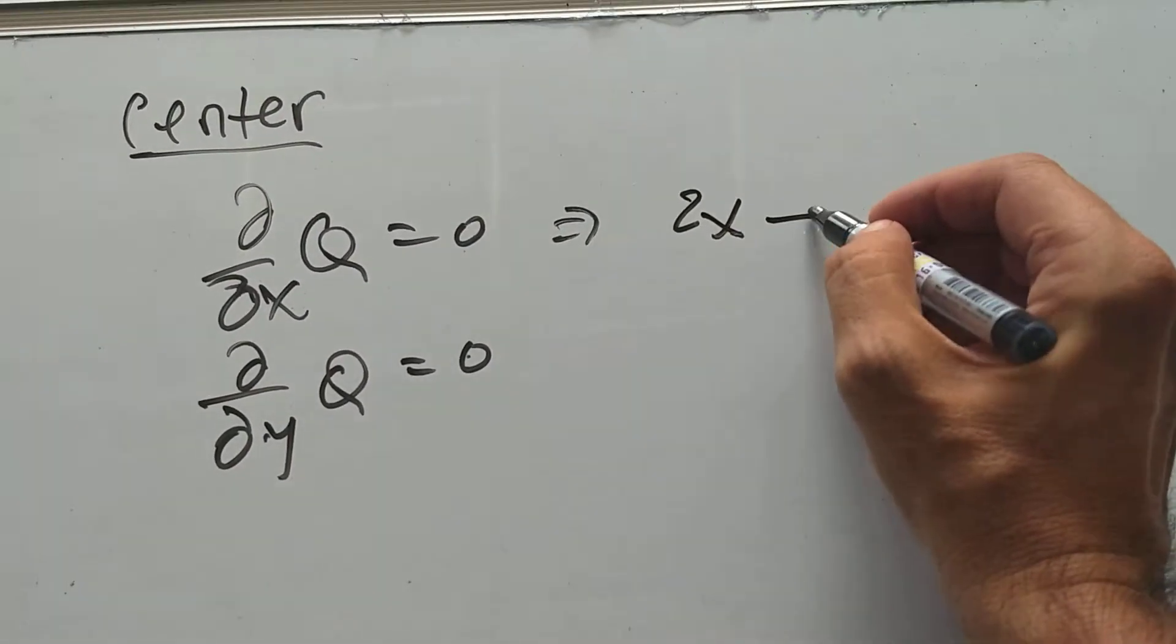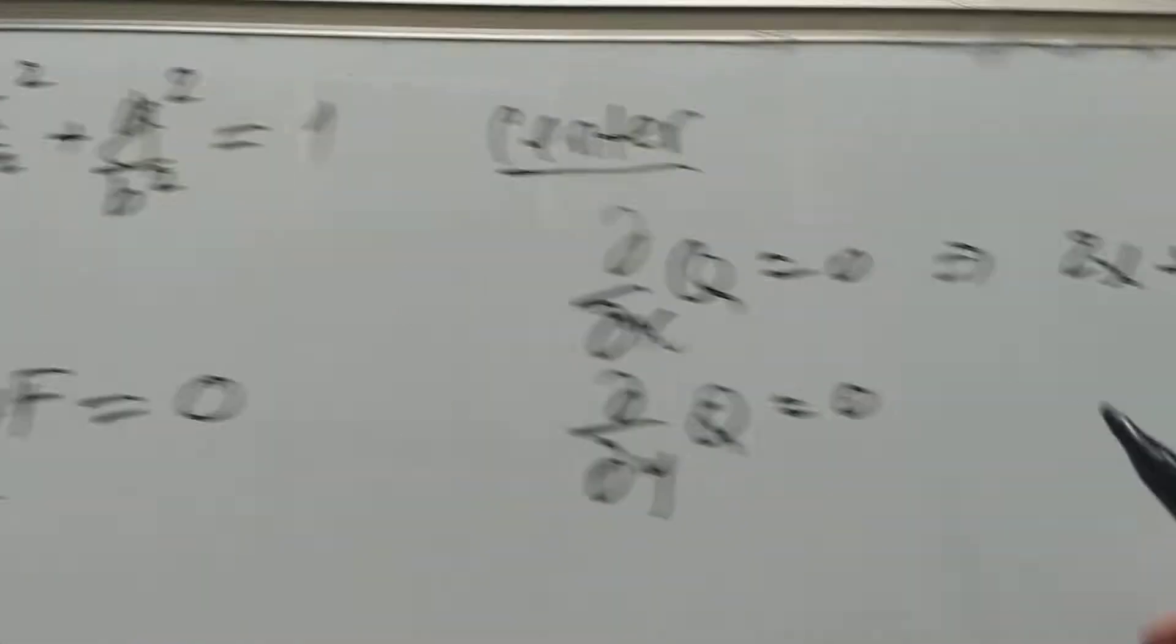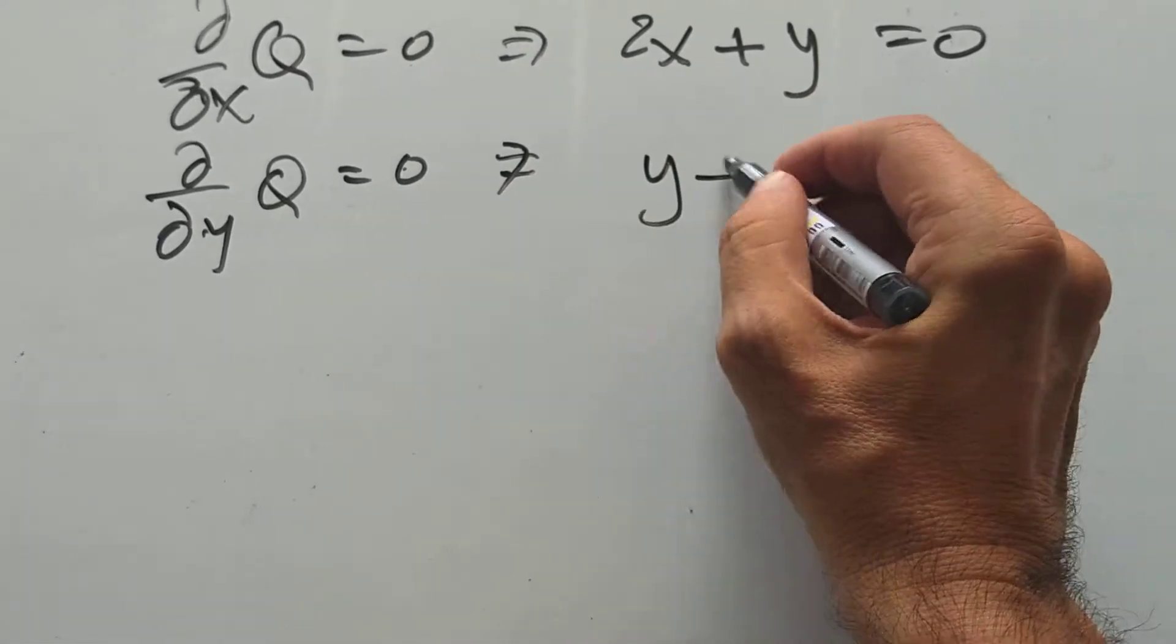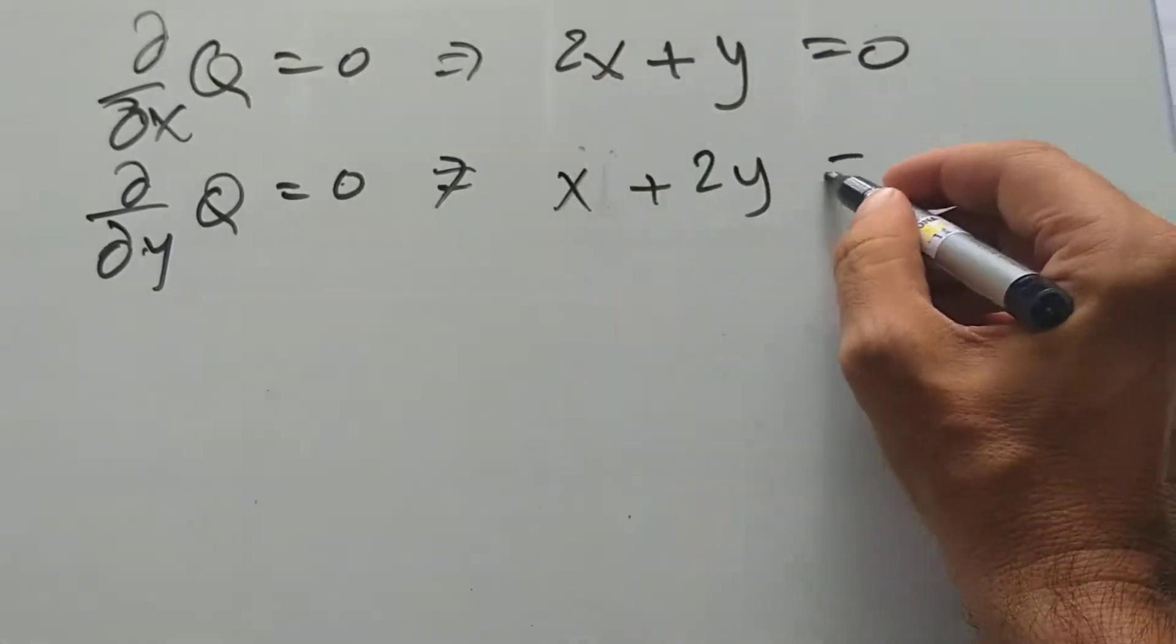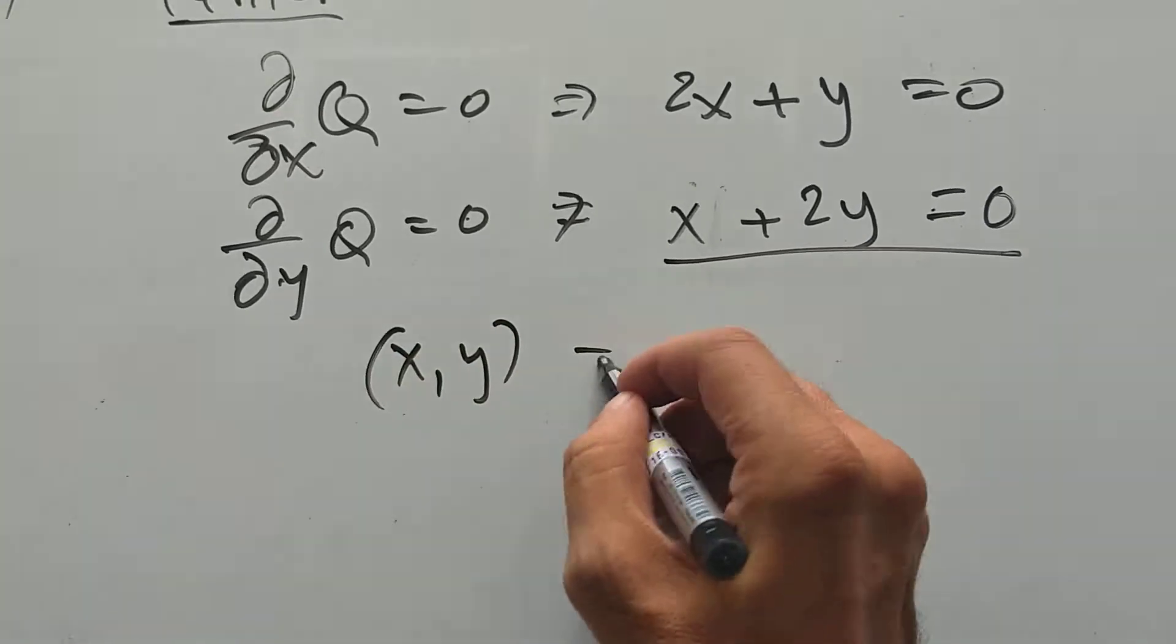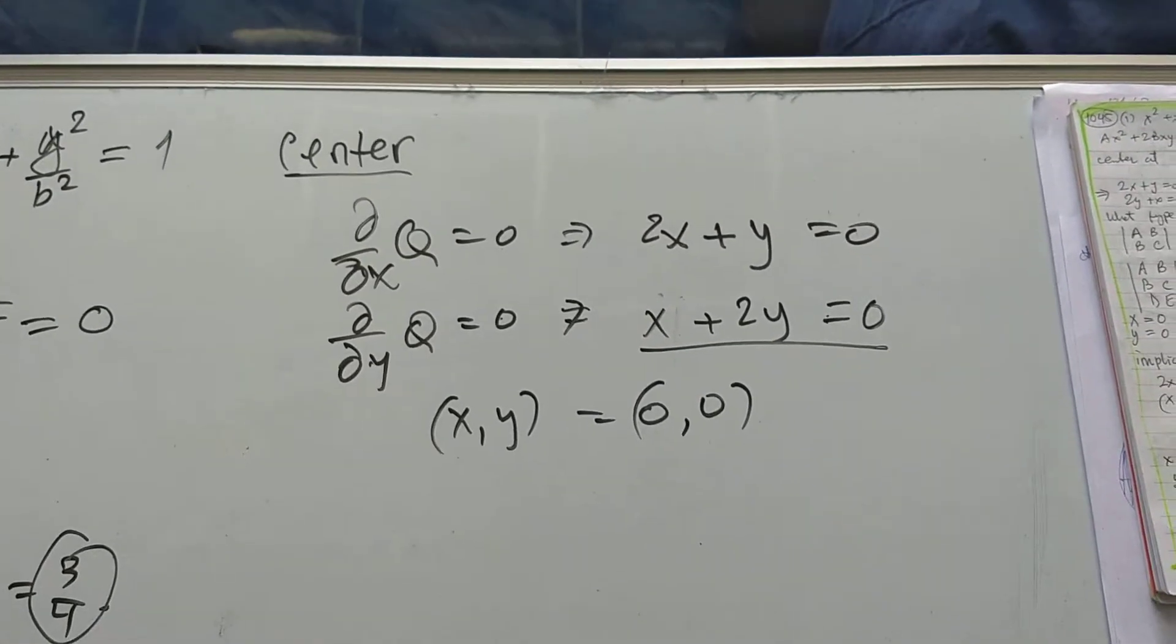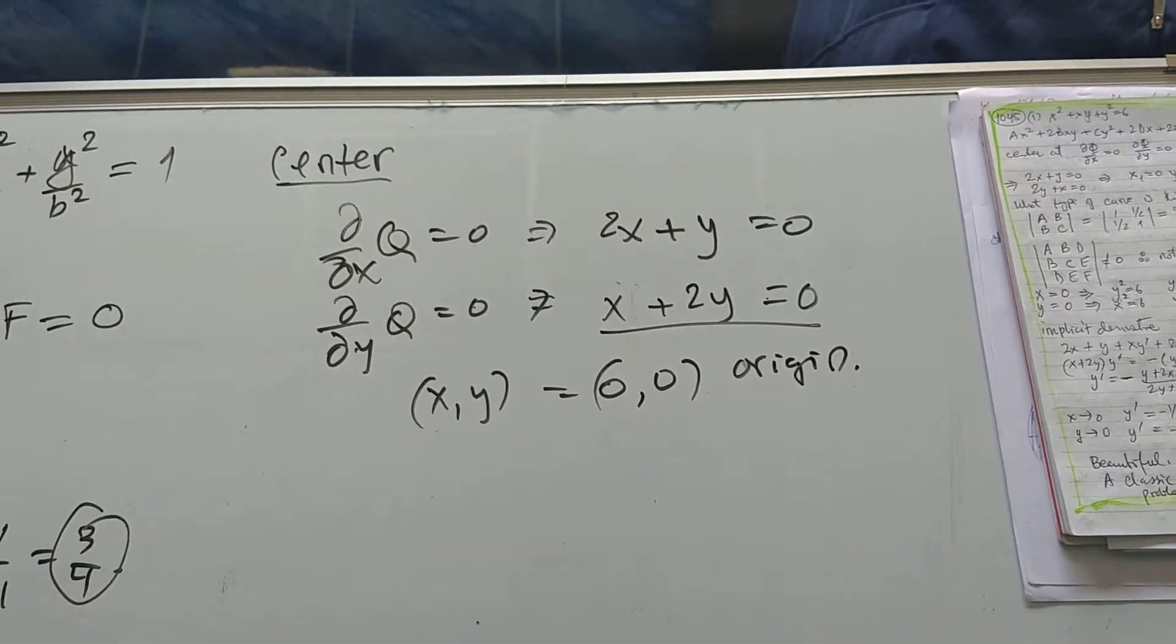This gives me, well, 2X plus Y is 0. And now I take the partial derivative with respect to Y. This gives me X plus 2Y is 0. And if I try to solve this situation, I get X, Y is 0, 0. So the center of my ellipse, center of my ellipse is at the origin. Okay, that's good. That gives us a lot of information.